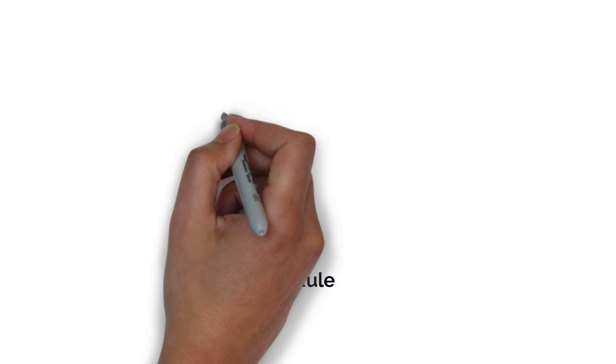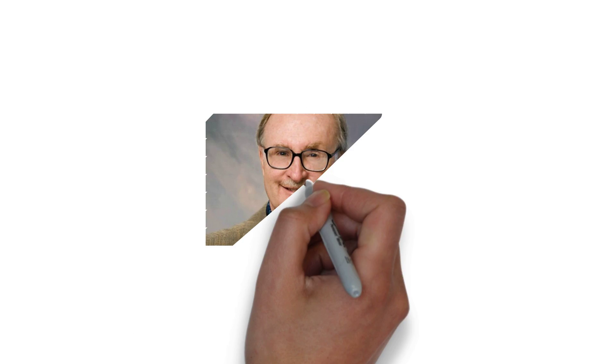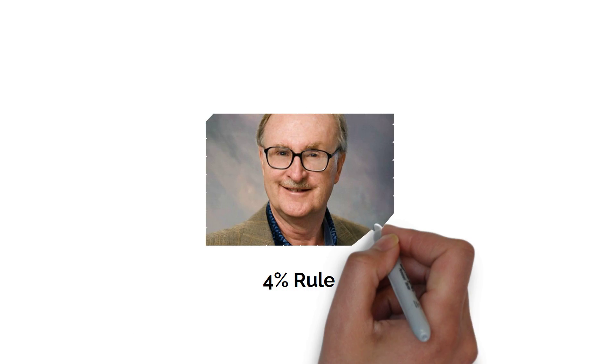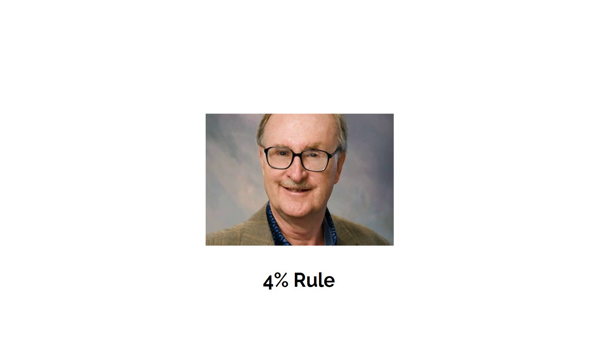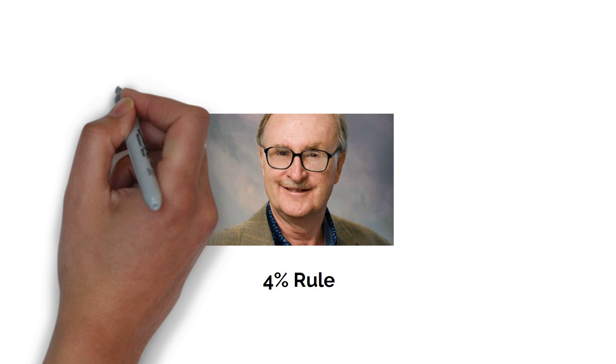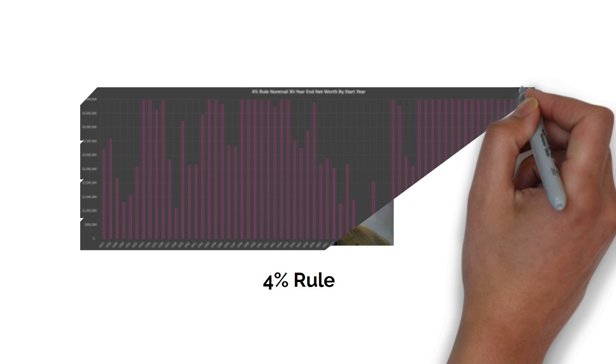When it comes to retirement withdrawal strategies, the most popular one for many years has been the 4% rule. Originally popularized by retired financial advisor William Bengen, it serves as a solid starting point for estimating retirement savings and spending goals. However, as we've explored in the past, it does have some drawbacks.